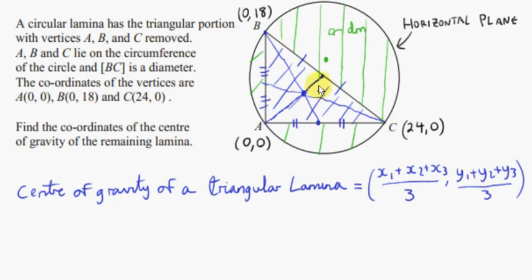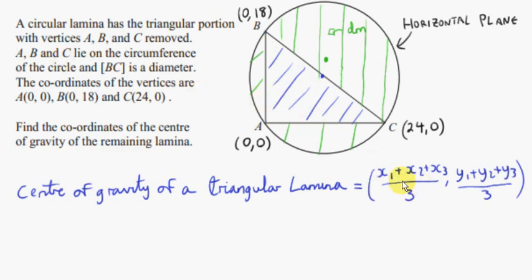The moment of the weight of each infinitesimal amount of the triangle about the centroid is zero — it's also the balance point. If we place a pin at this point, we can balance the triangle there; all the moments all around sum to zero. If we have the coordinates of the corners of the triangle, we can find that point very easily: we just get the mean of the x-values of the corners and the mean of the y-values of the corners.